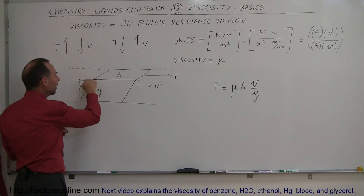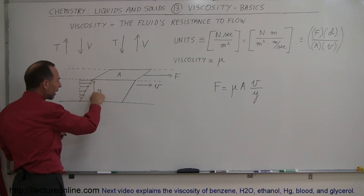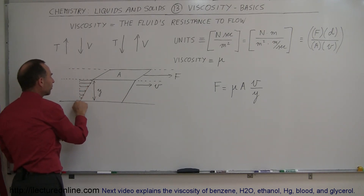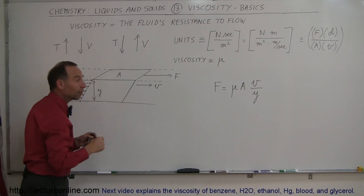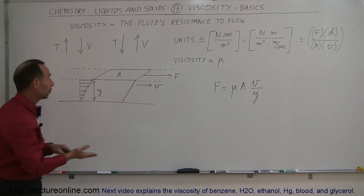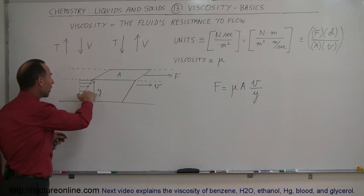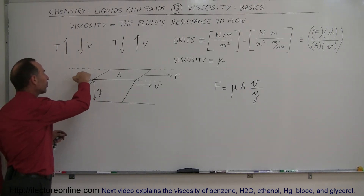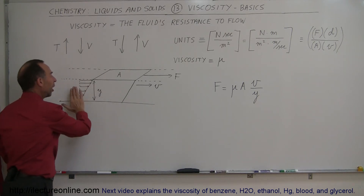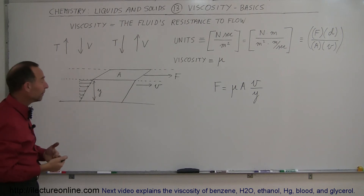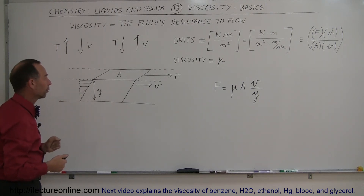The velocity of the water below those layers decreases as you go further and further down, all the way to the bottom. At the very bottom, the velocity of the water along the bottom is zero because of the adhesion forces between the water molecules and the bottom of the container. So the velocity of the water is greater as you go up and smaller as you go down — caused by viscosity, the resistance to flow, and those intermolecular forces.